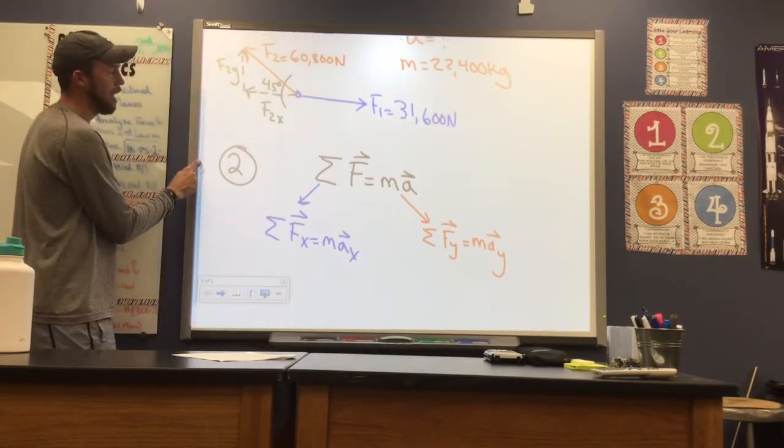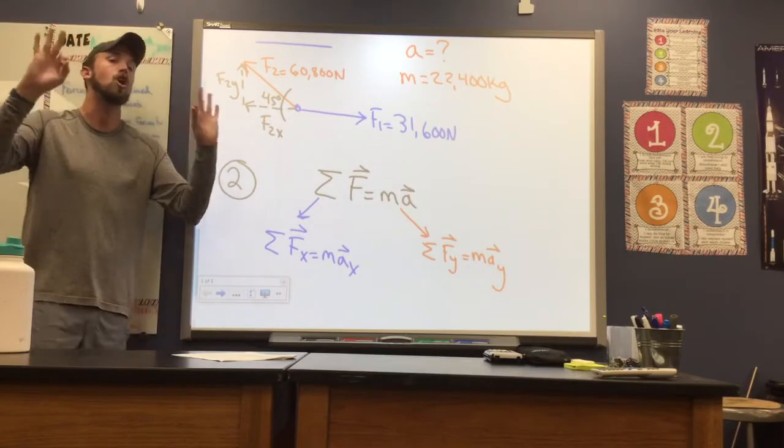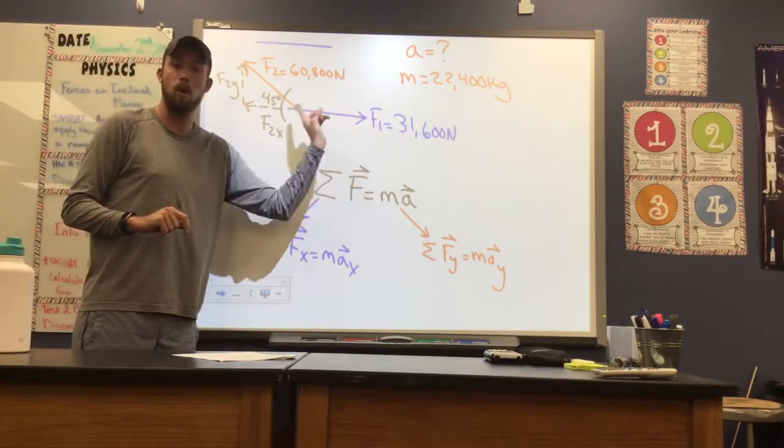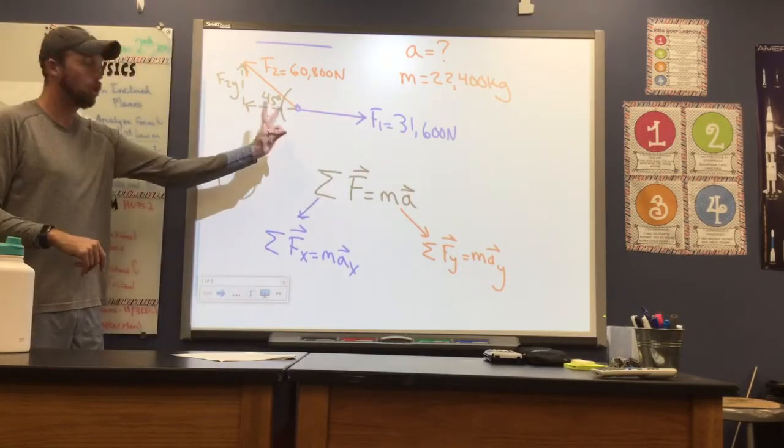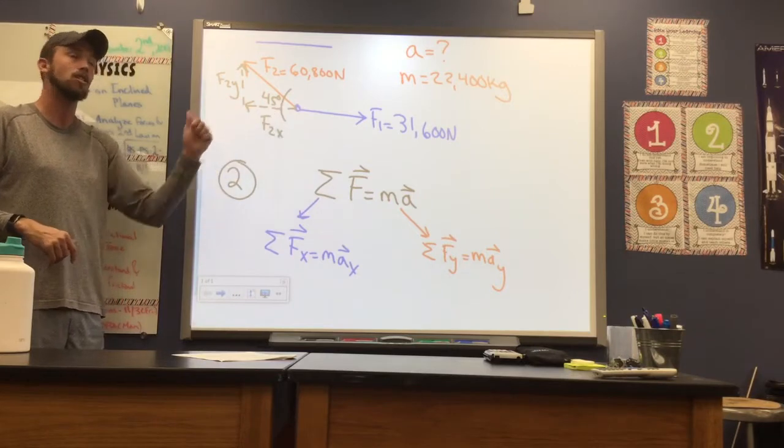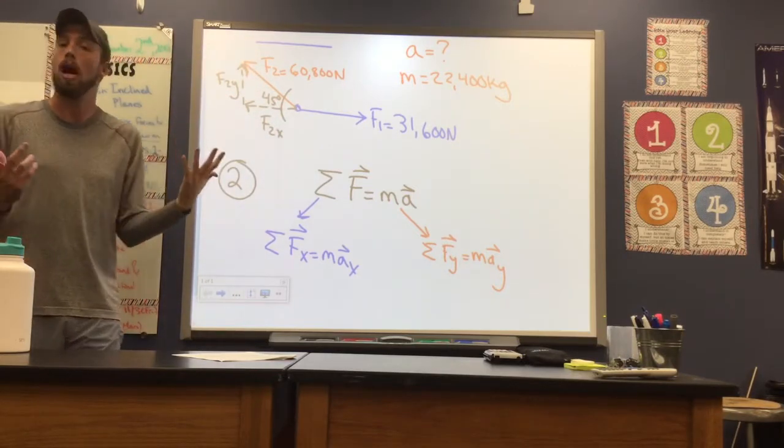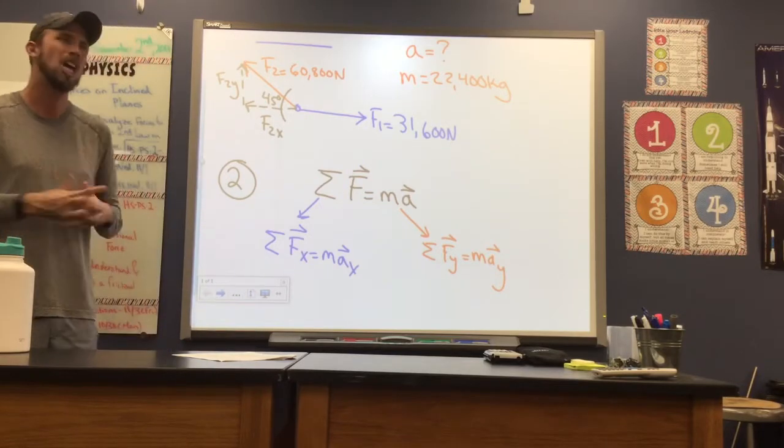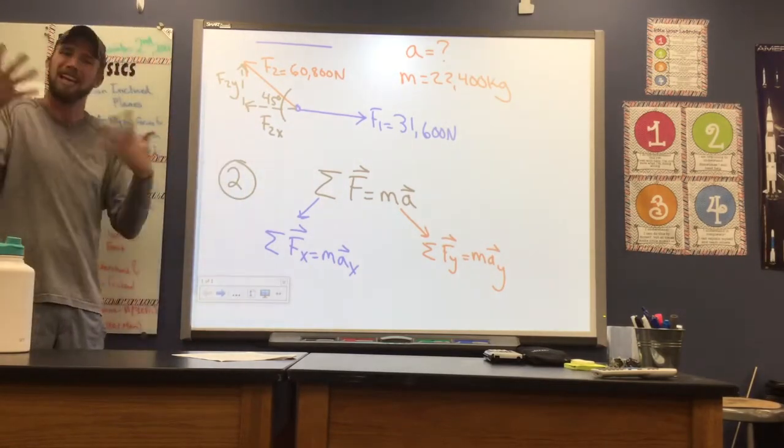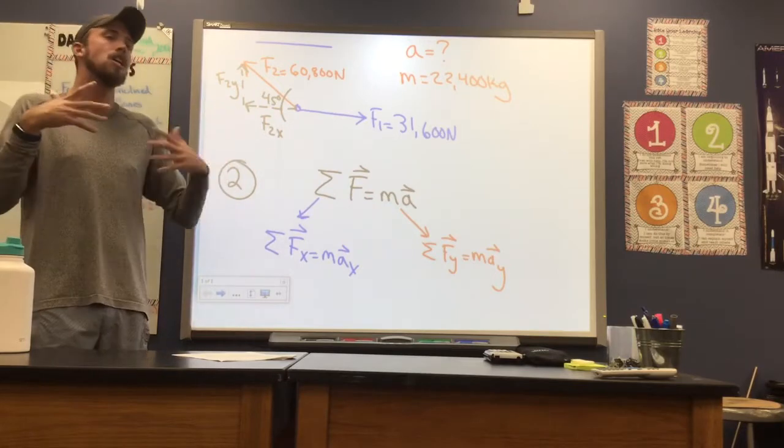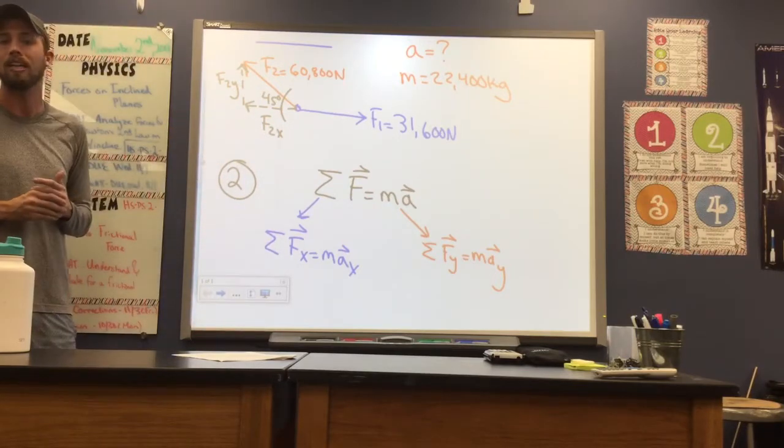So as you can tell from our free body diagram, there are three forces total. One, F1, that's just horizontal. Two, F2 in the X, which is the X component of F2. And three, F2 in the Y, which is just the Y component of F2. We really have two forces, but we're going to treat F2 like it has an X and a Y component so that we can make solving this problem a lot easier.